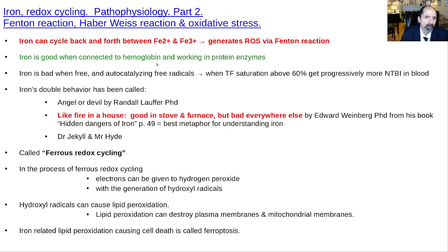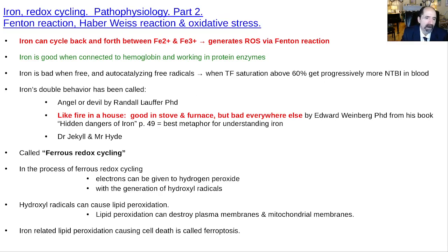Iron is good when it's doing its job, working with enzymes and hemoglobin. It's bad when it's free and auto-catalyzing free radicals. When transferrin — the iron transport in the blood — has saturation above 60%, you get progressively more NTBI, non-transferrin-bound iron in the blood, and that causes all sorts of problems.